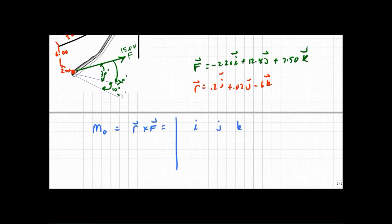I, j, k and my r is 0.2, 0.02 minus 0.06